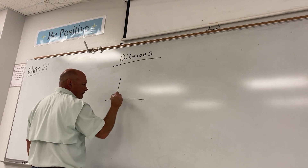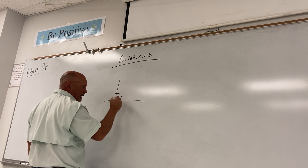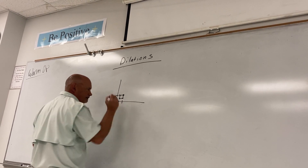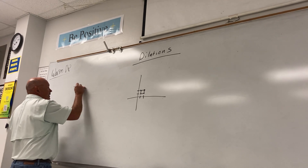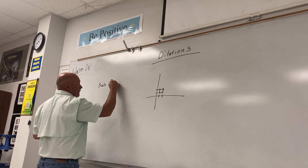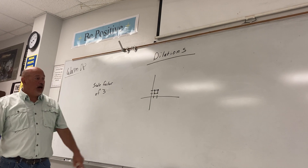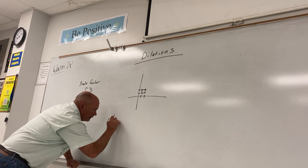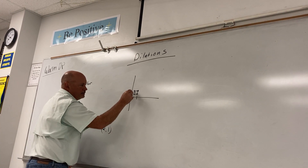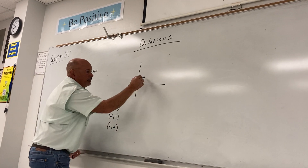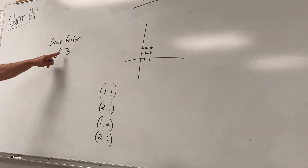Let's make a little rectangle. Put a point at (1,1), (2,1), (1,2), and (2,2) — we'll start with a tiny rectangle. We are going to make this rectangle larger by multiplying by the scale factor of three. The four points are: (1,1), (2,1), (1,2), and (2,2).